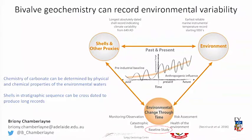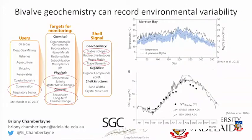These kinds of studies can be useful for many ecological applications, but for us we're really looking at baselines before the management processes in the Coorong. Bivalve geochemical proxies are quite useful for many different users — mining companies around the world use them to trace pollution in waterways — but there's also a big use in conservation and regulation. We're using proxies to look at temperature, salinity, water changes, and long-term seasonal changes through climate change in the Coorong.